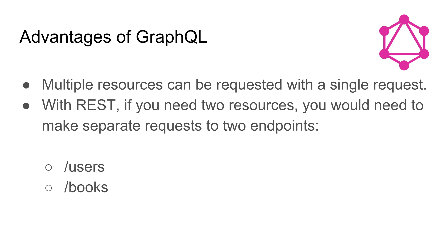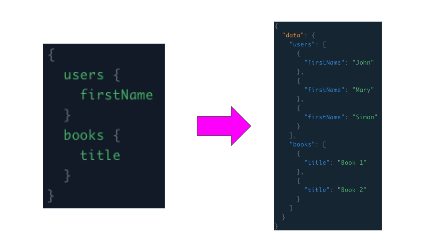Another advantage of GraphQL is that multiple resources can be requested with one single request. With REST, if you needed two separate resources you would need to make two different requests to two different endpoints. So in this example our API can retrieve users and books — with a REST API you'd have to make one GET request to users and another to books. But in GraphQL it's one single request where we're asking for the first name of users and the title of the books, and as you can see in the response that's all we're getting back. This has obvious advantages both for the client and for the server.